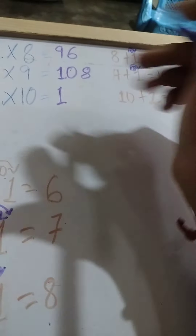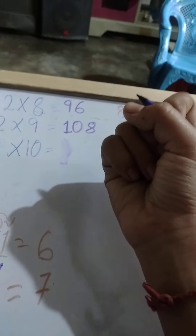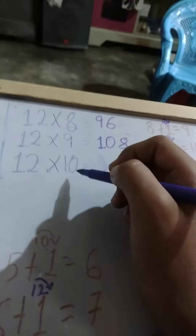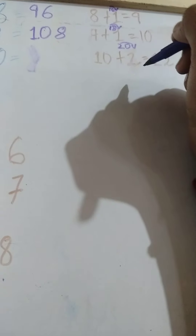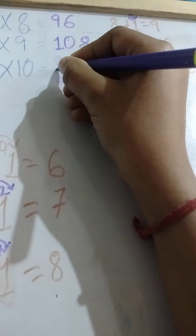We put the 10 in our hand. Then 10 twos are 20. We add 20 to 10, giving the answer 12. We write the 12 here, and the 0 is in our hand, so we put the 0 here. And our table is ready!